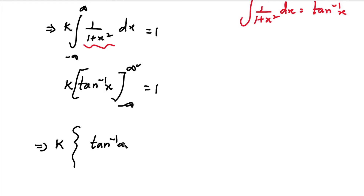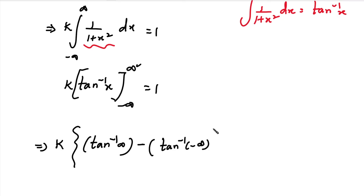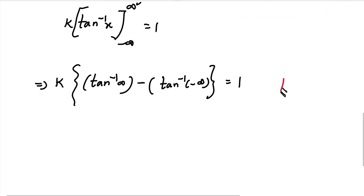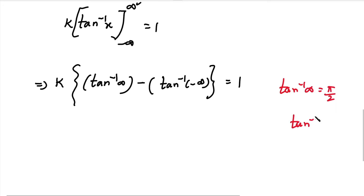Applying the limits: substituting the upper limit, we get tan inverse of infinity, then minus. Substituting the lower limit, we get tan inverse of minus infinity. So k times [tan inverse(infinity) minus tan inverse(minus infinity)] equals 1. The value of tan inverse of infinity is pi by 2, and the value of tan inverse of minus infinity is minus pi by 2.